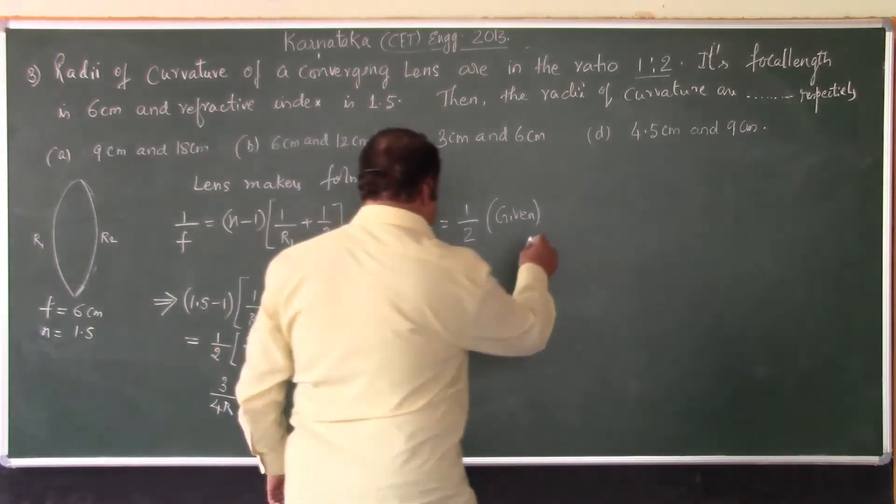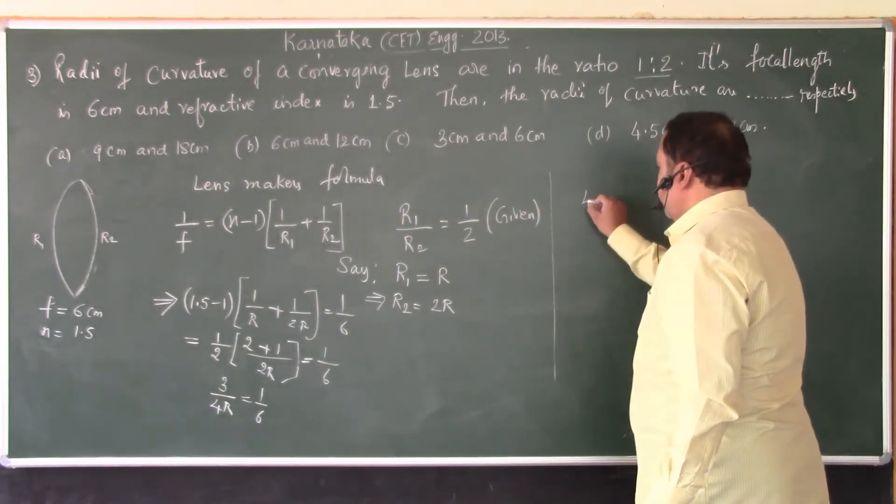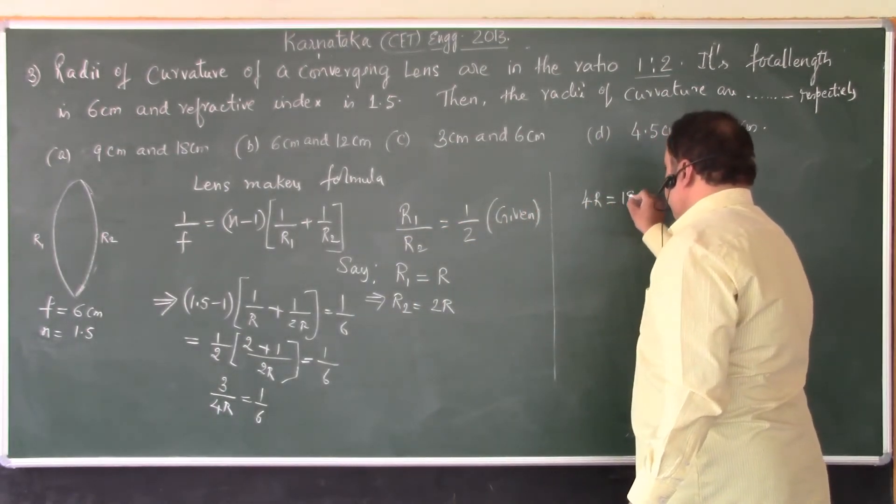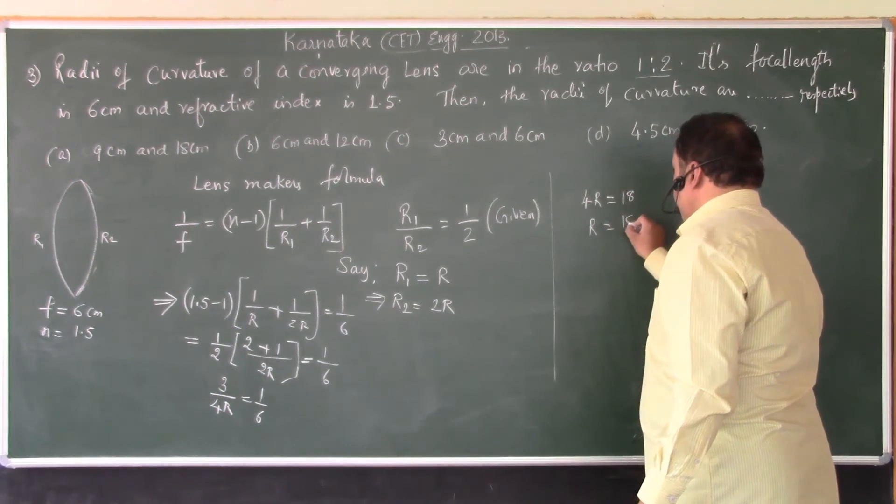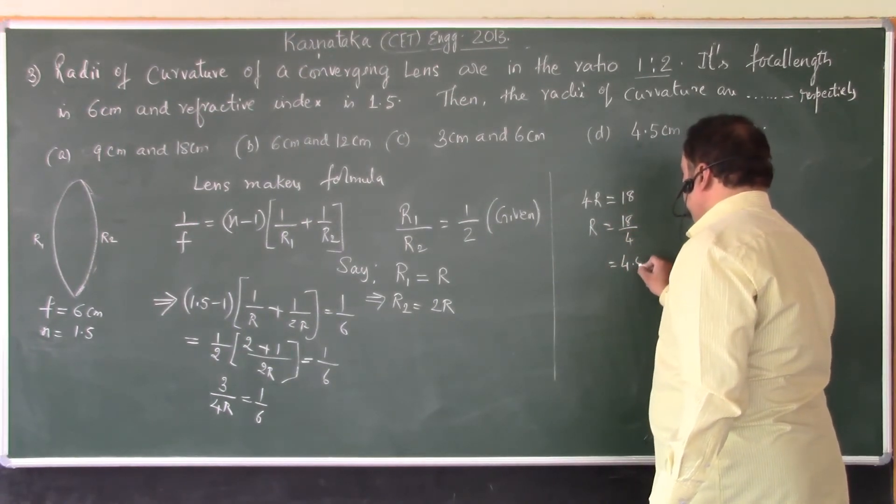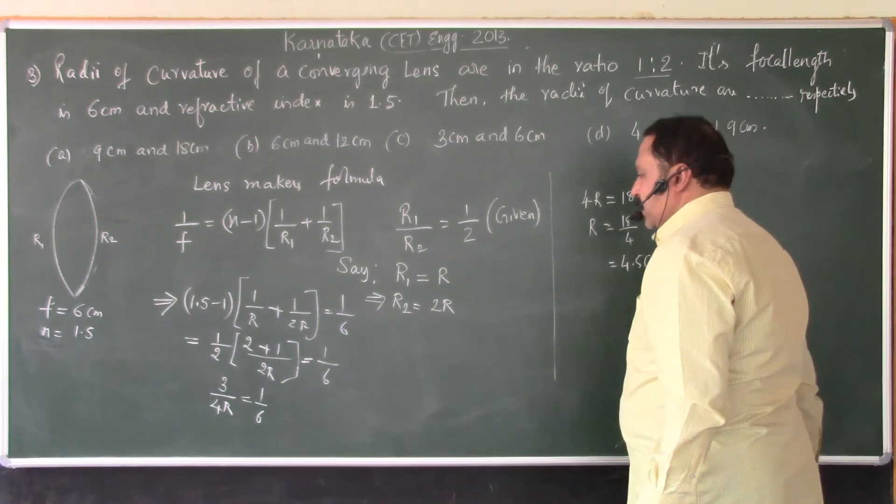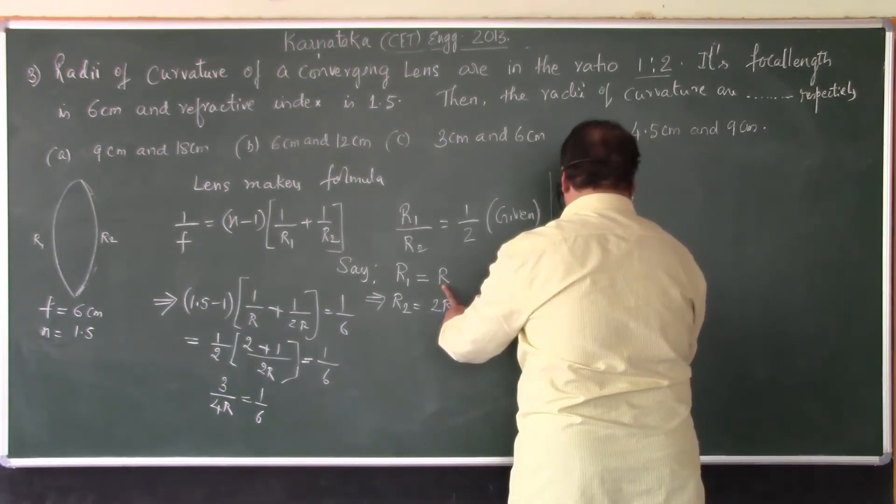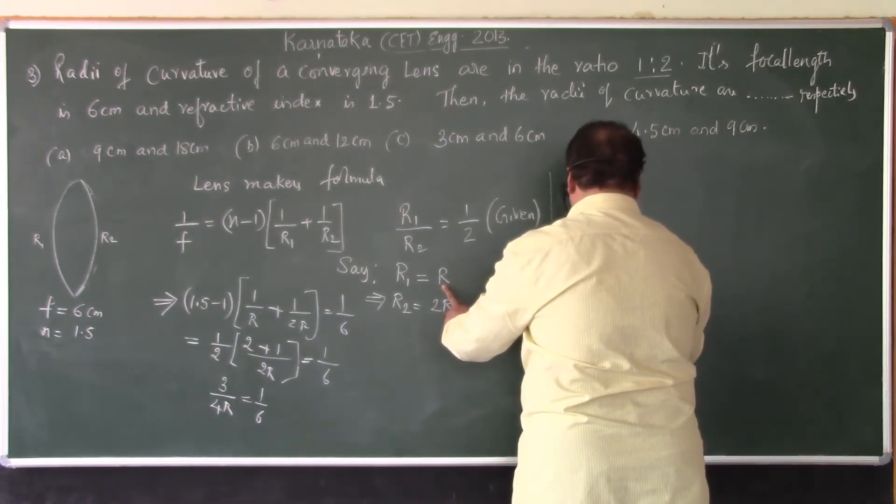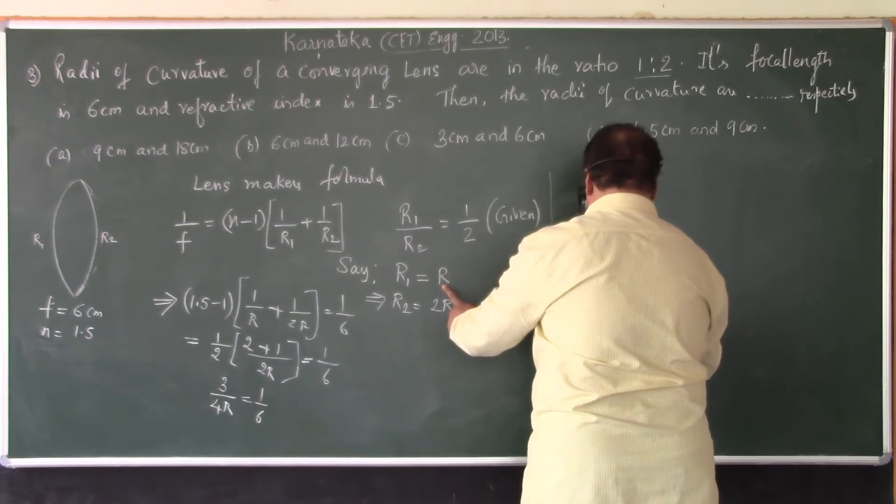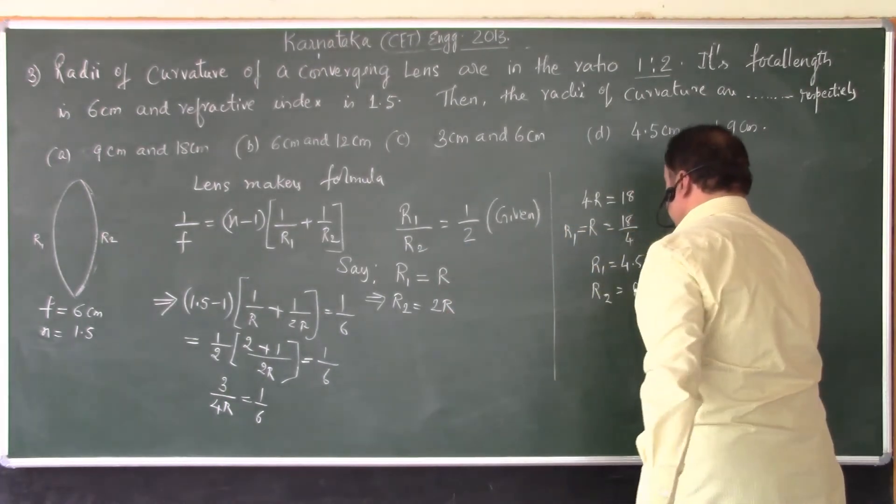Cross multiplying, 4R is equal to 18. Therefore, R is equal to 18 by 4, which is equal to 4.5 centimeters. So, if we have regarded R as R1, then R2 should be 2 times of R, that is 9 centimeter.